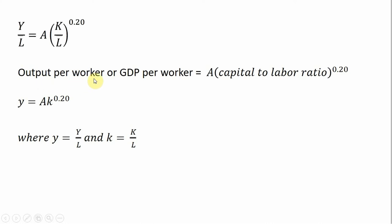And in terms of words, the left-hand side is output per worker or GDP per worker. And that equals A, total productivity, which is multiplied by the capital-to-labor ratio, which in this production function is raised to the 0.2 power.